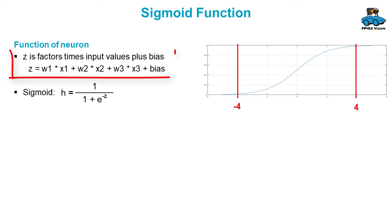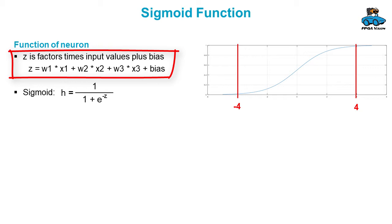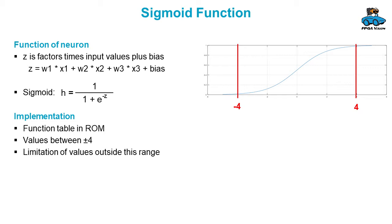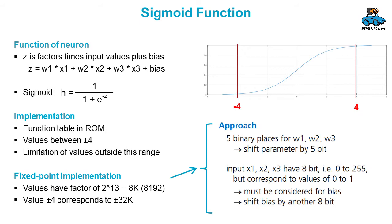In the neuron you first calculate a value z, which is a factor times input values plus a bias. This value z goes into the sigmoid function, which is depicted here. In the FPGA we implement this function in a ROM. The ROM contains the values between plus minus four, and values outside this range are limited. We have to consider that we have a fixed point implementation, and in an earlier video we discussed the conversion from floating point to fixed point.